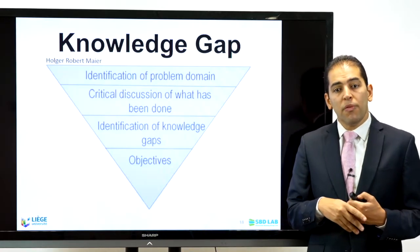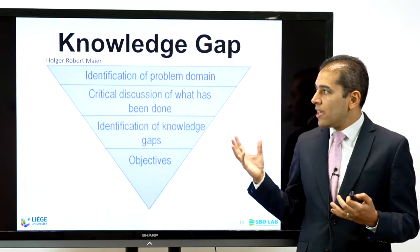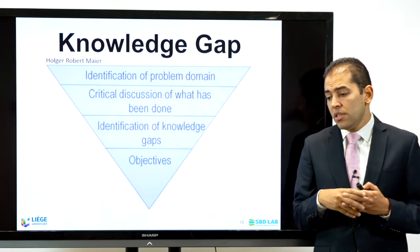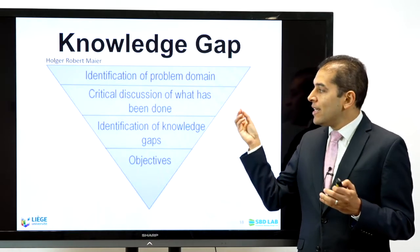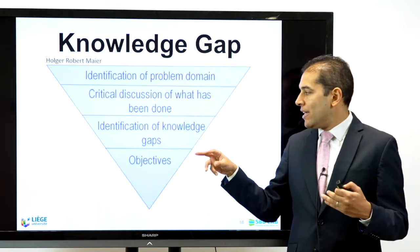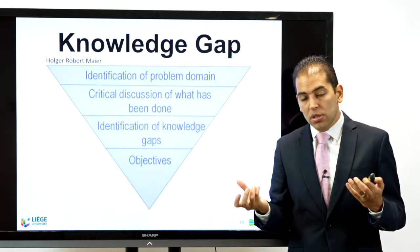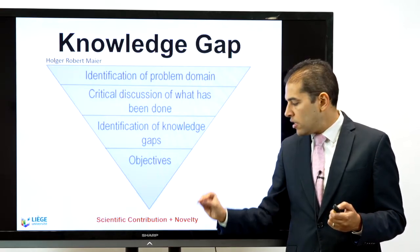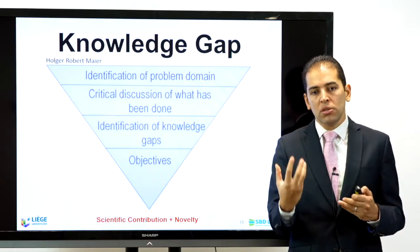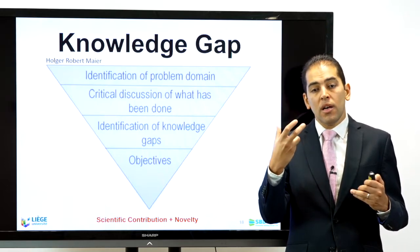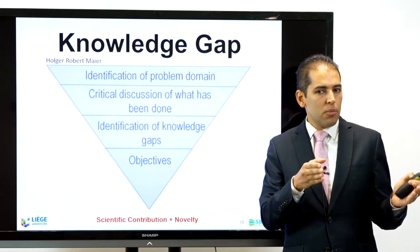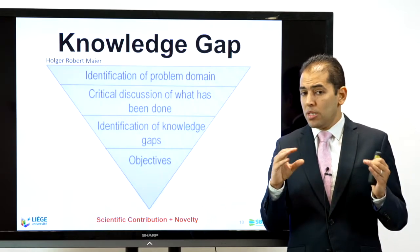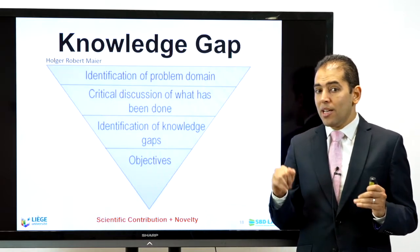Based on that, you can move to knowledge gap definition. I always use the triangle developed by Holger Robert Meyer in all introductions — whether for a proposal, thesis, PhD dissertation, or scientific paper. We start with identification of the problem domain, then a critical discussion of what has been done, then we identify the knowledge gap that has not been bridged previously, then define the objective of our study, and finally define the scientific contribution and novelty of the work. This is the best way to structure your introduction to convince readers: what is the problem, what is unique about it, what gap are you bridging, what is the objective with specific operationalized parameters, and what is the added value.